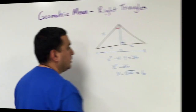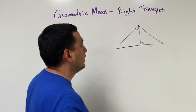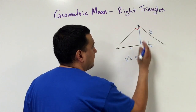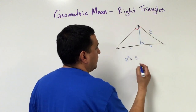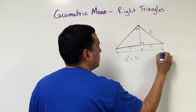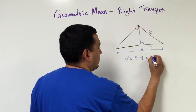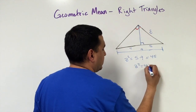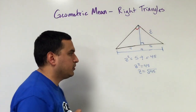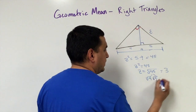For the other leg, instead of putting the variable on this side, I put it over here and call it z. Then z squared equals 5 times 9 — since z is on the right side along with the segment of length 5, and the full hypotenuse is 4 plus 5 equals 9. So z squared equals 45. Simplifying the square root of 45 as the square root of 9 times 5 gives z equals 3 square roots of 5.